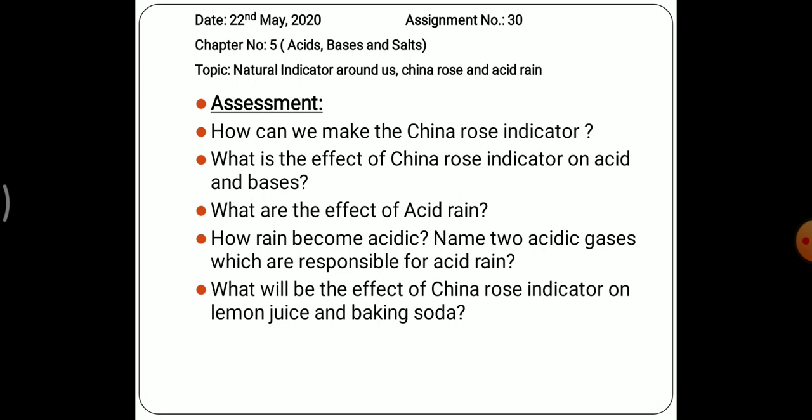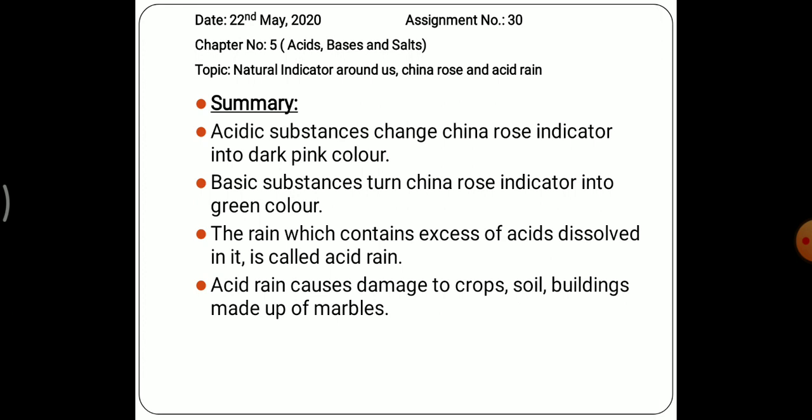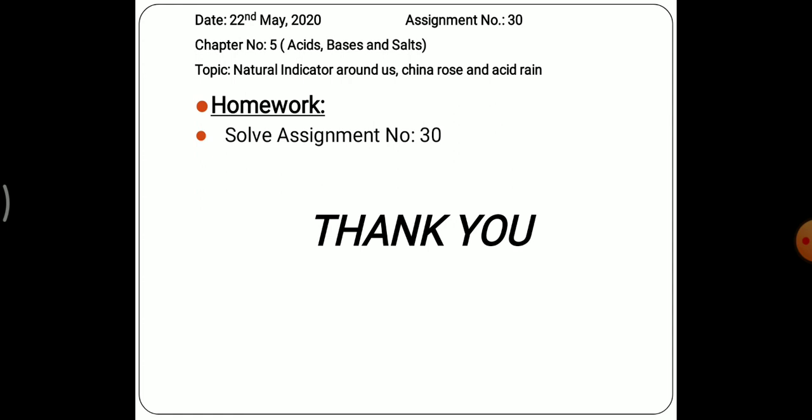At last, let us summarize what we have done today. We studied about China rose indicator: acidic substances change China rose indicator into dark pink color, and basic substances turn it into green color. The rain which contains excess acids dissolved in it is called acid rain. We studied the causes of acid rain and its effects — it causes damage to crops, soil, and buildings made of marble. Please solve assignment number 30 in your notebook very neatly. Thank you, we will meet tomorrow again — have a nice day.